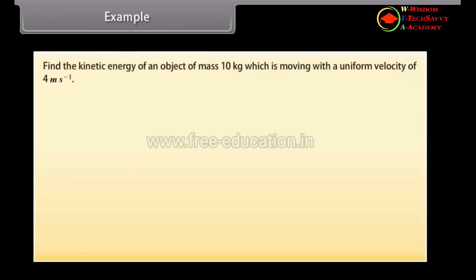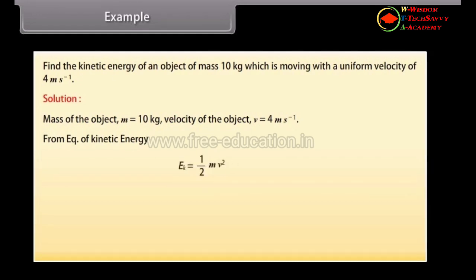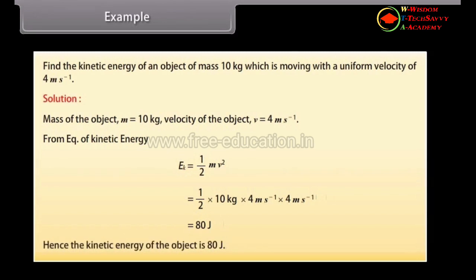Example. Find the kinetic energy of an object of mass 10 kg moving with a uniform velocity of 4 m/s. Solution: M = 10 kg, V = 4 m/s. Kinetic energy = ½ × 10 × 4 × 4 = 80 joules. Hence, the kinetic energy of the object is 80 joules.